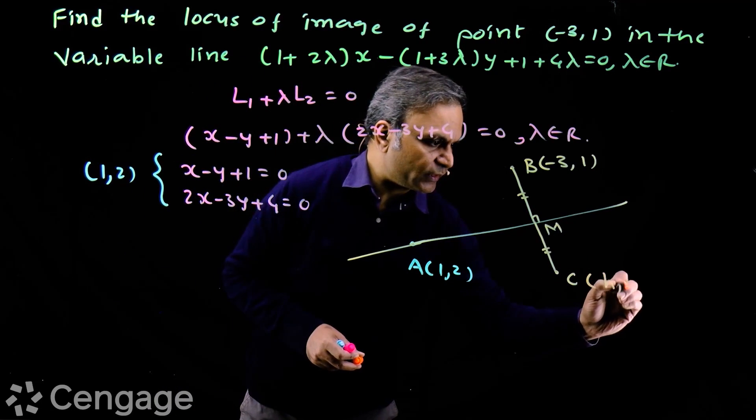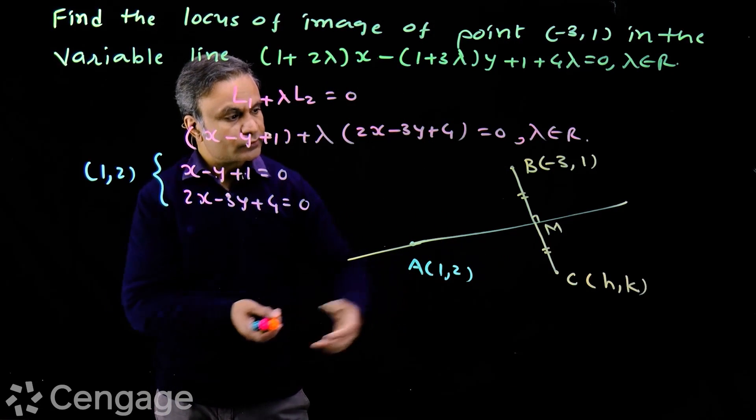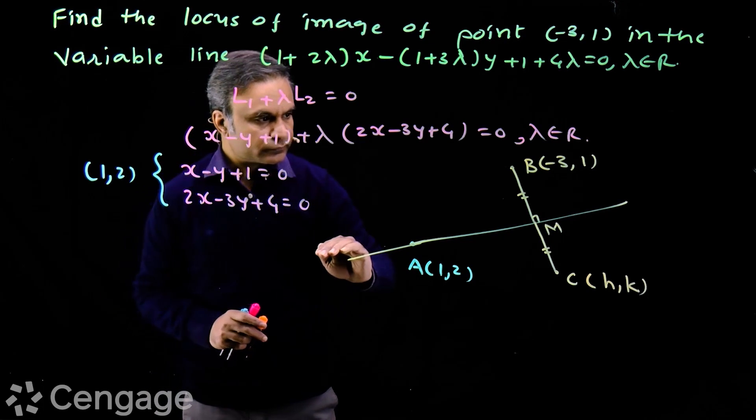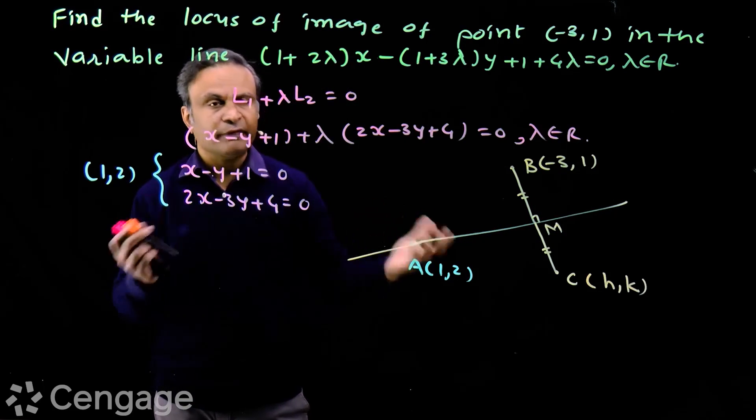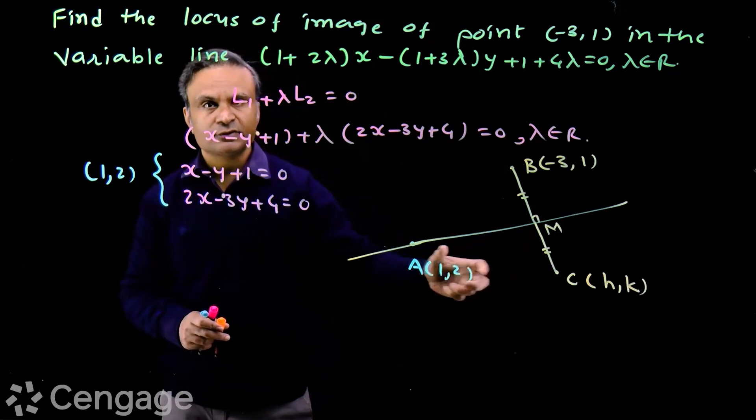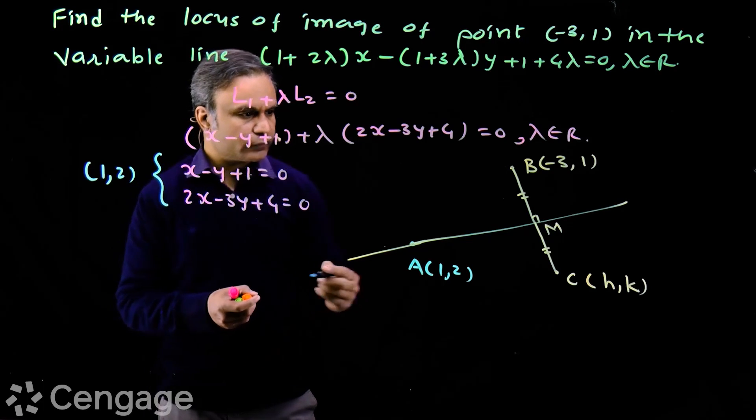We extend this line to point C such that BM is equal to CM. Suppose coordinates of point C are (h, k). Point C is variable, so we have taken its coordinates as (h, k). This is one of the members of the family, so there will be infinite such points C. So C is variable point.